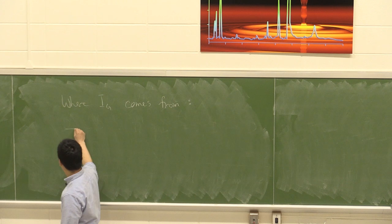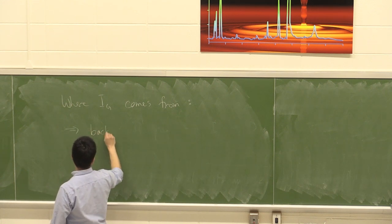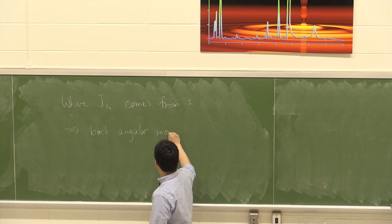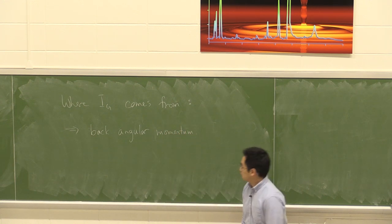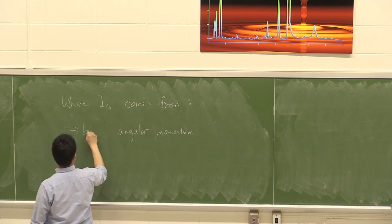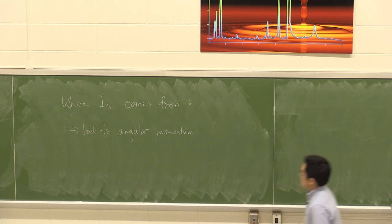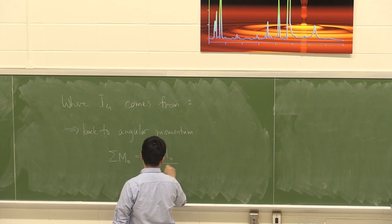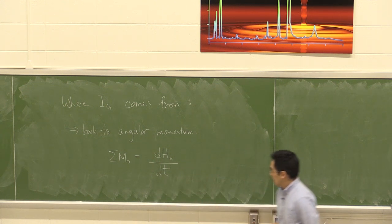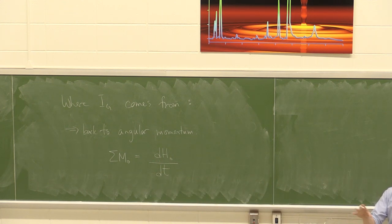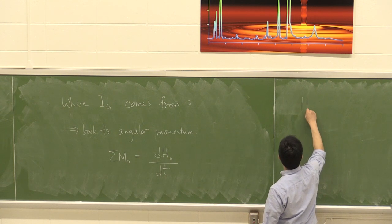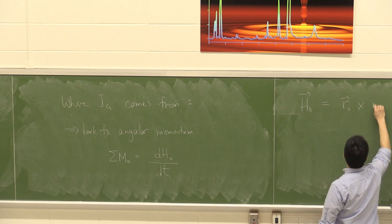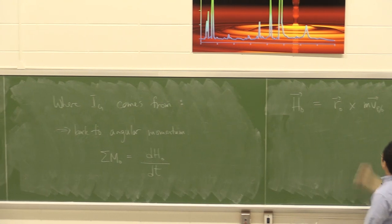I want to bring you back to angular momentum. Angular momentum is the other time in our lectures where I talked about things that were spinning. You'll remember this equation: the sum of moments about a fixed point O is equal to the change of H0, our angular momentum. H0 was equal to R_O cross MV.